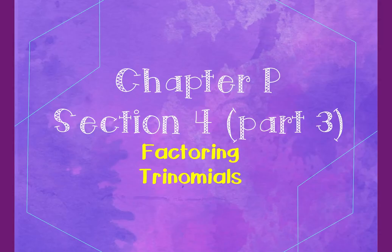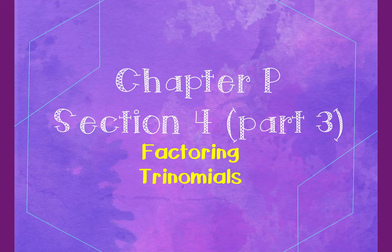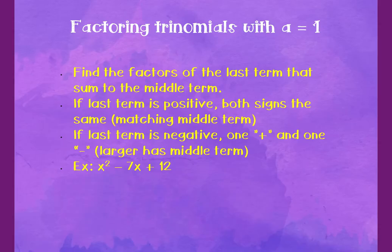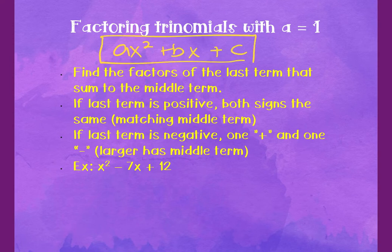Part three of factoring — still in section four — covers regular trinomials with no special characteristics. They're not perfect squares or perfect cubes; they just have three terms. The standard form is ax² + bx + c. If you don't see a number in front of x², then a = 1, and if that's the case, we follow specific steps.